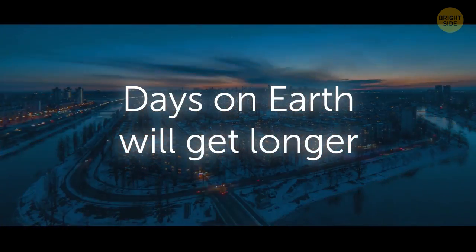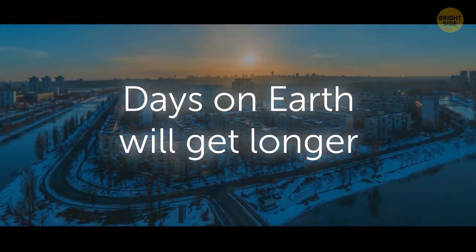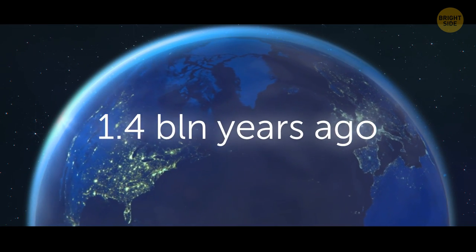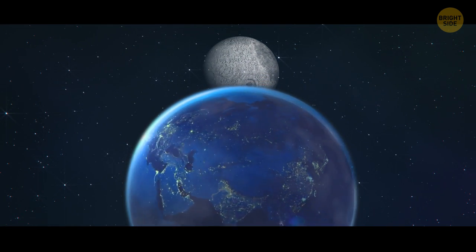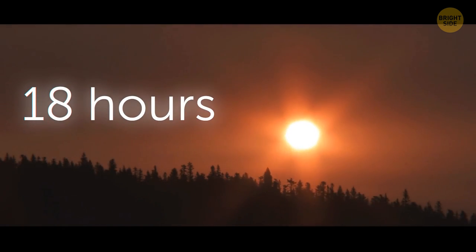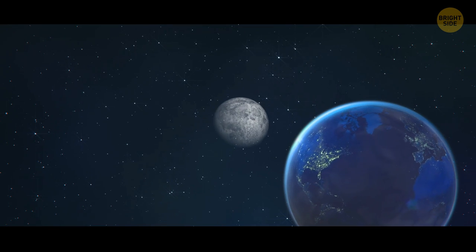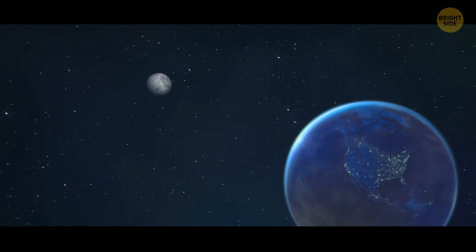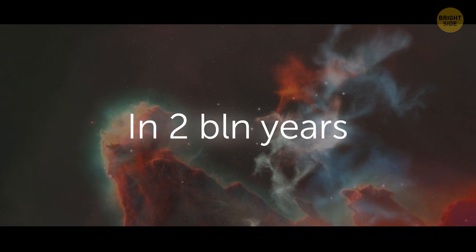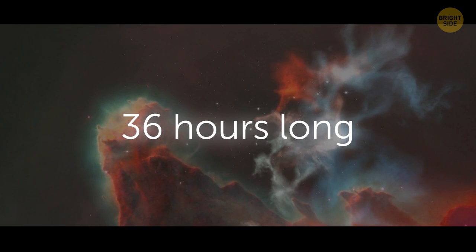Days on Earth will get longer. 1.4 billion years ago, the Moon was much closer to our planet. It made the Earth rotate faster, so the day was only 18 hours. The Moon is continuously moving away from Earth. In 180 million years, we'll gain 1 extra hour. In a little over 2 billion years, a day on Earth will be 36 hours long.